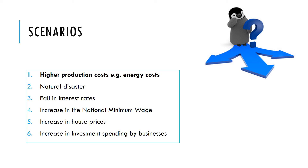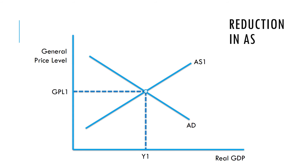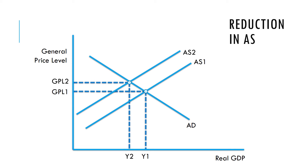Let's look at a few scenarios. Consider higher production costs — for example, if energy costs increase, which curve would that affect and in which direction? Higher production costs would result in a reduction in aggregate supply, causing a rise in inflation and a fall in national income.